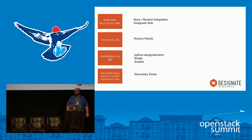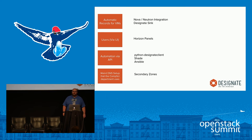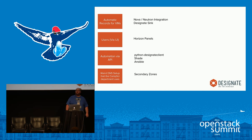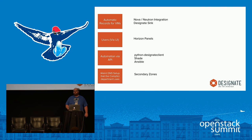For automatic records we have Nova/Neutron integration and also a Designate-sync component which listens to the event stream out of all the different projects across OpenStack. It's plugin-based — you can write your own plugin to listen to the event stream and create or delete records as you see fit. Before the Nova/Neutron integration, this is how we did automatic record creation for VMs: listen to the Nova/Neutron event queue, see a server was created, get its IP, and create the name. You can also listen to the Trove or Sahara queue and trigger tasks based on those events.